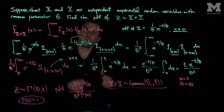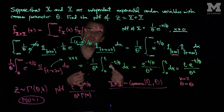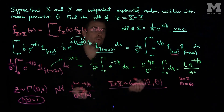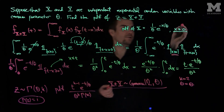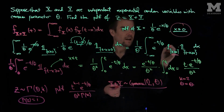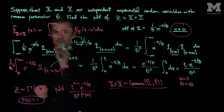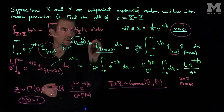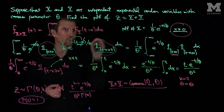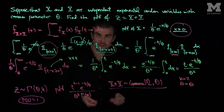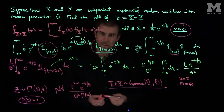When doing convolutions to find PDFs of sums of random variables, it's important to look at the support of the PDF and incorporate it into the conditions of the convolution so that your limits of integration are correct. Thank you very much.